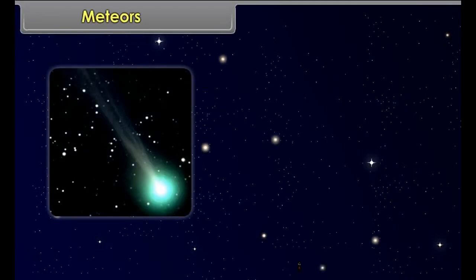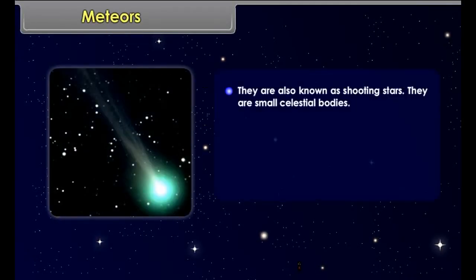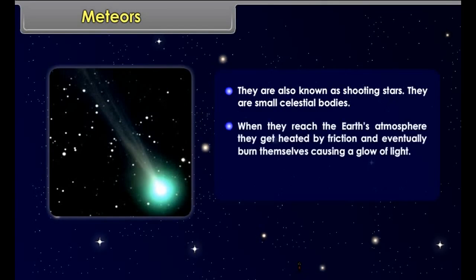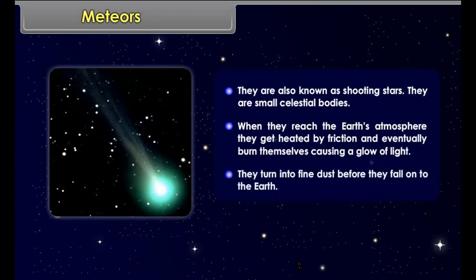Meteors are also known as shooting stars. They are small celestial bodies. When they reach the Earth's atmosphere, they get heated by friction and eventually burn themselves, causing a glow of light. They turn into fine dust before they fall onto the Earth.